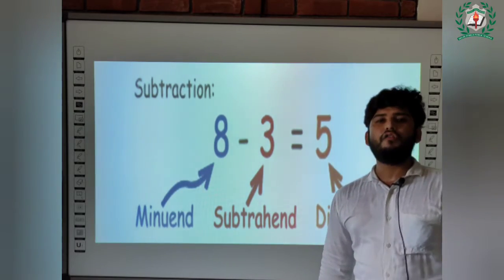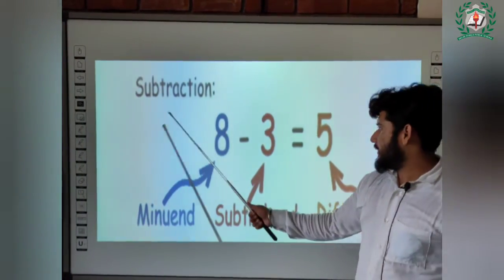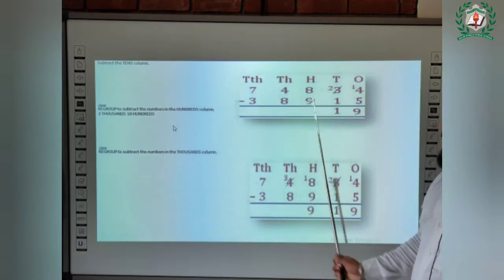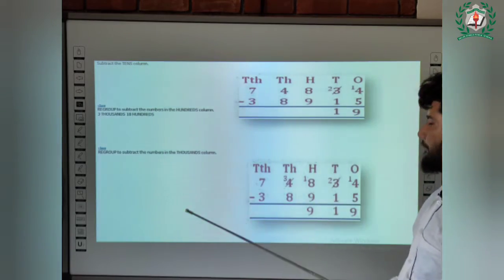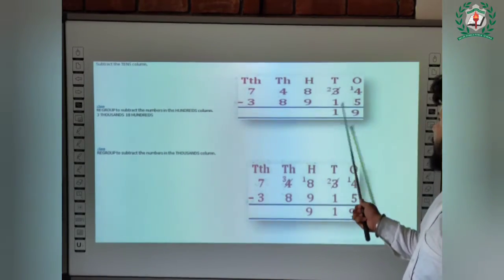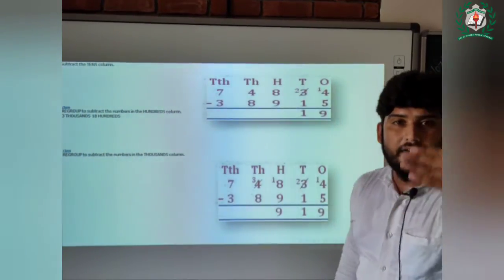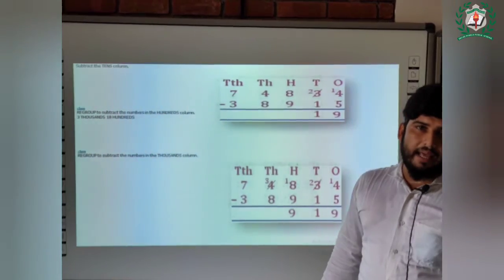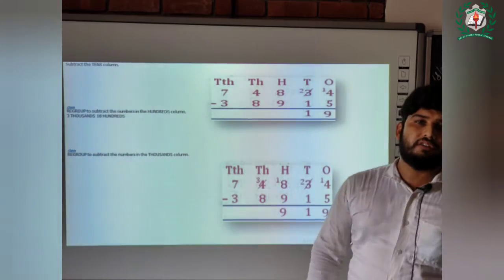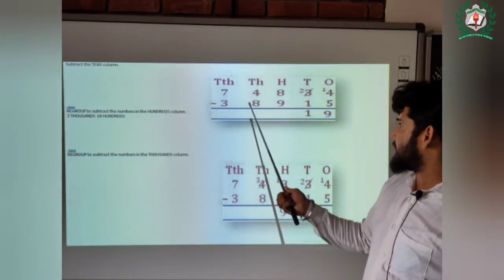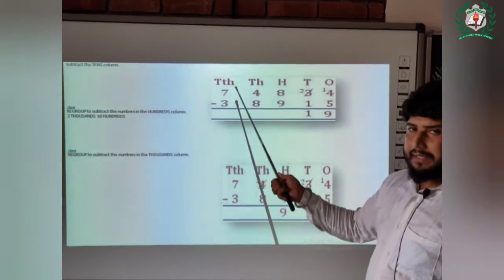Now we will see how we can subtract five, six, or seven digit numbers. We have a number on the screen. First, we have to write the digits: ones below ones, tens below tens, hundreds below hundreds, thousands below thousands, and ten thousands below ten thousands — like this, as you can see on the first step.